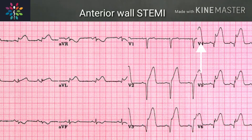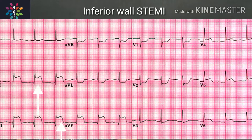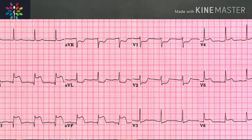In ST elevation MI, anterior leads V1, V2, V3, V4 showing ST elevation indicate acute anterior MI, with reciprocal ST depression in leads II, III, and AVF. In inferior wall MI, you get ST elevation in leads II, III, and AVF with reciprocal ST depression in V1, V2, V3.